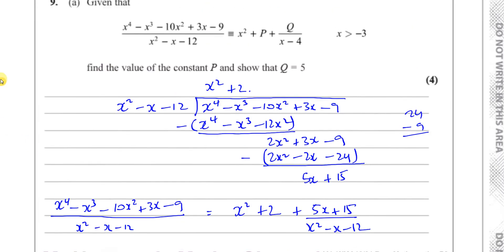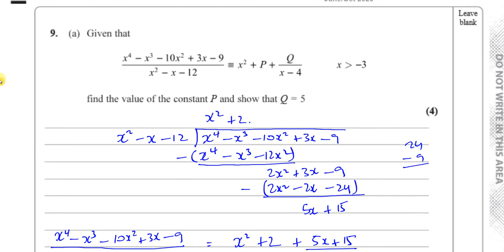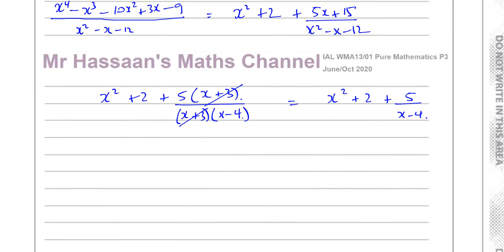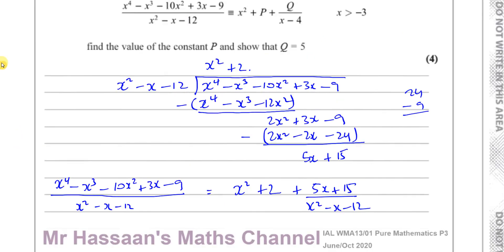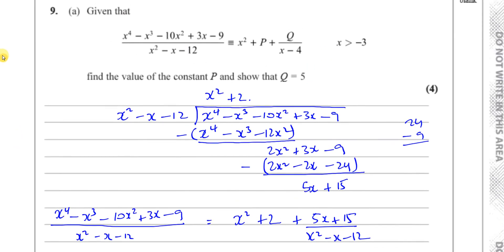And that's exactly what we had to show: x squared plus p plus q over x minus 4. Find the value of the constant p and show that q equals 5. So we've shown that q equals 5 — that's your q. And p is equal to 2. We've shown that q is equal to 5. And there's the answer to part A.